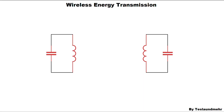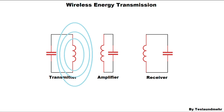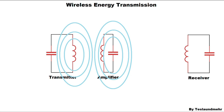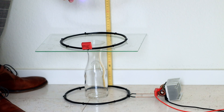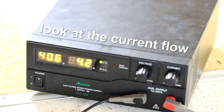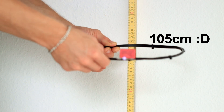Here's what it is. We can add a third oscillating circuit — an amplifier. We place it between the transmitter and the receiver. The principle is simple: the amplifier oscillating circuit is excited by the transmitter to oscillate because it has the same resonant frequency, and now the amplifier also emits a magnetic field. With this we can increase the distance by a lot. Now we are able to transmit energy over a distance of about 110 cm. I am very satisfied with this.